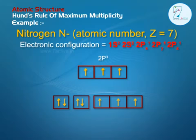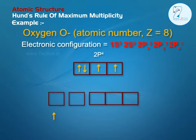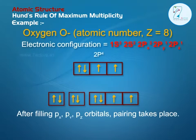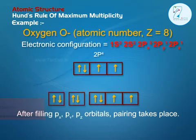The seventh electron enters in the 2pz orbital. Oxygen (O): Atomic number Z is equal to 8. Configuration: 1s2, 2s2, 2px2, 2py1, 2pz1. After filling 2px, 2py, and 2pz subshells with one electron each, pairing in 2px takes place.